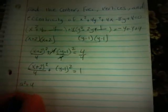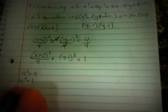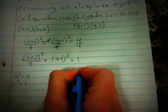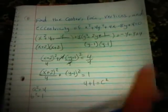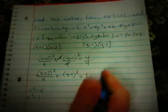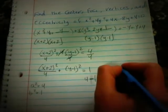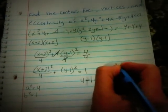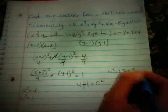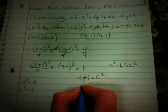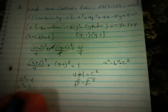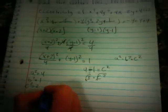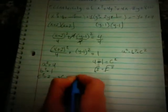Now we know a squared equals 4, b squared equals 1. To find c, we use a squared minus b squared equals c squared for an ellipse, so 4 minus 1 equals 3, meaning c squared equals 3, so c equals square root of 3. Also, b equals 1 and a equals 2.